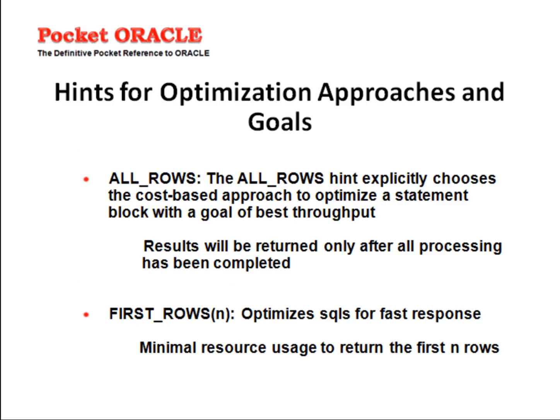Let's see the hints for optimization approaches and goals. ALL_ROWS: the ALL_ROWS hint explicitly chooses the cost-based approach to optimize a statement block with a goal of best throughput. The results will be returned only after all processing has been completed. FIRST_ROWS: the FIRST_ROWS hint optimizes SQL for fast response. It uses minimal resources to return the first n rows.